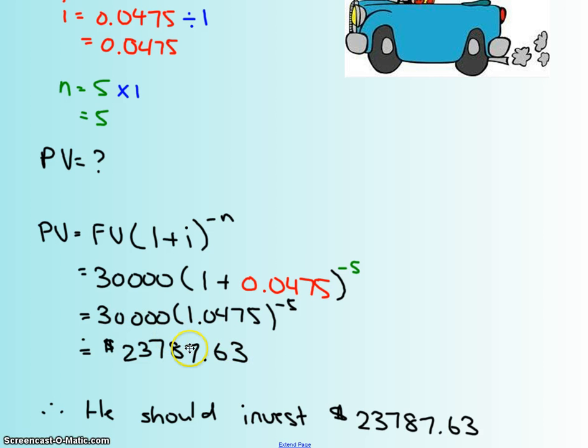So remember we're talking about money, so two decimal places, and you want to round to the nearest cent. And then at the very end, since it's a word problem, you want to put some sort of a therefore sentence, maybe something very simple. So he should invest $23,787.63.